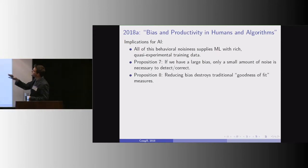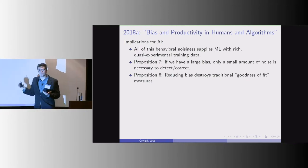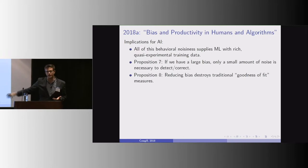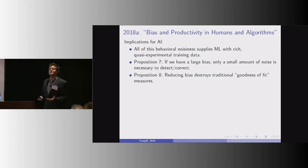I also show that settings where we can reduce bias because of all the noise also just destroy traditional goodness of fit measures for machine learning.